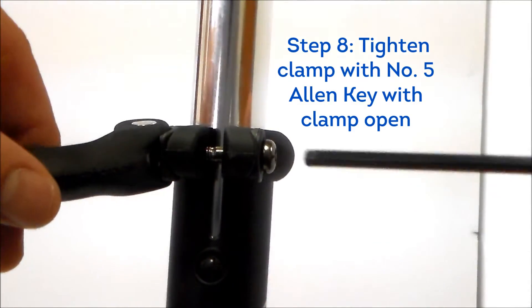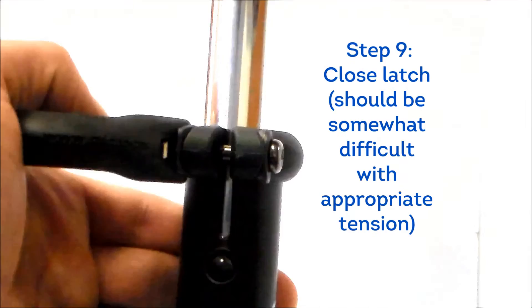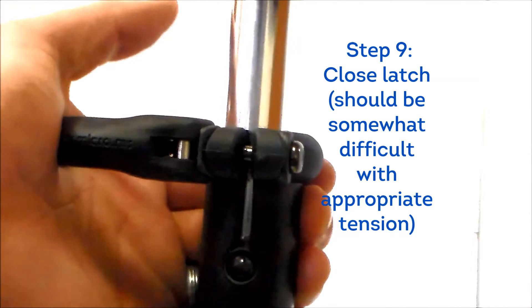With latch open, tighten clamp using number five allen key. Finish by closing latch. This step should be somewhat difficult with appropriate clamp tension.